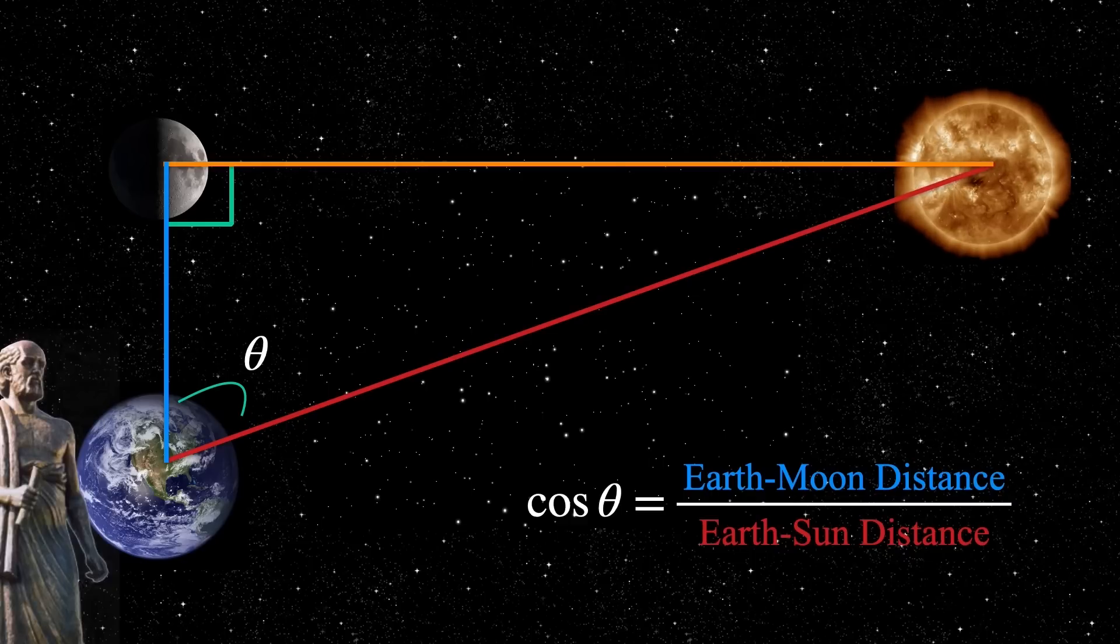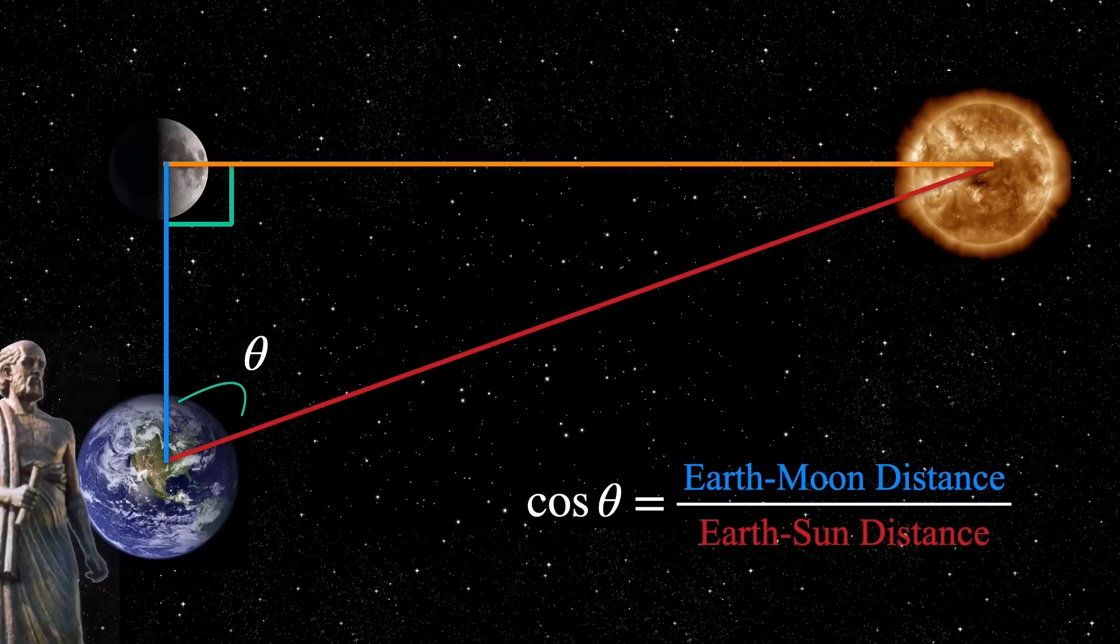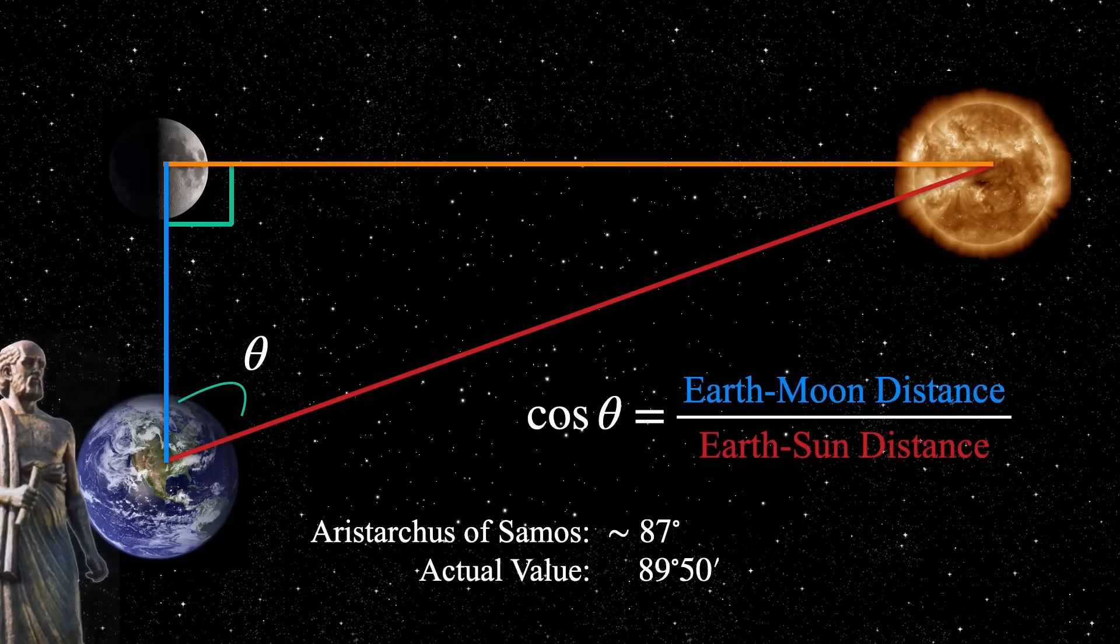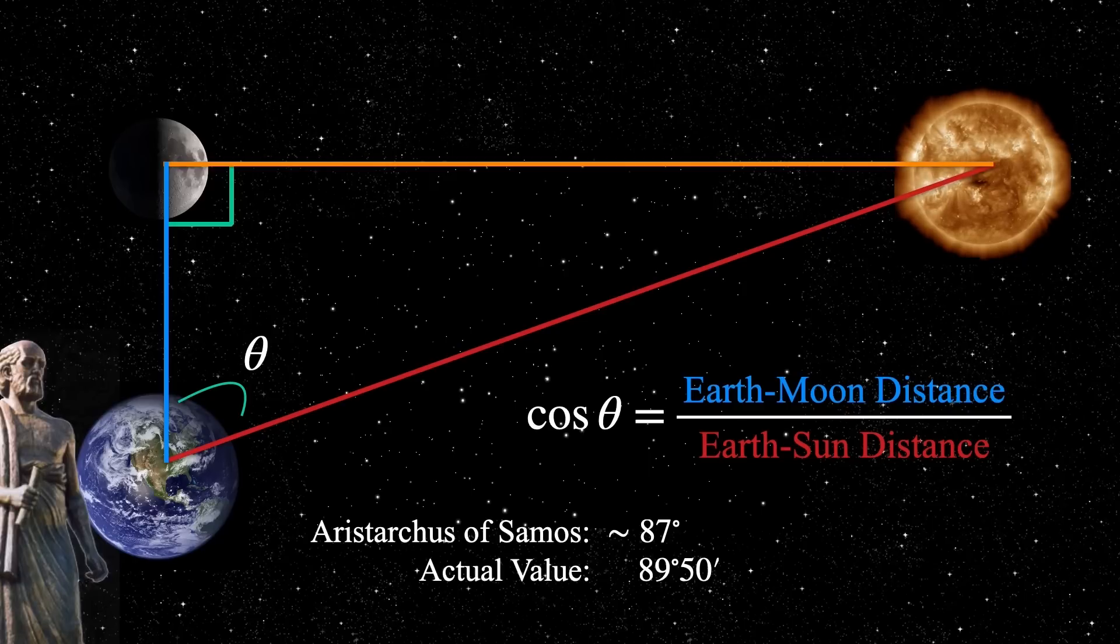But the moon in that triangle is at the 90 degree point. So we have a 90 degree triangle with the moon at the 90 degree point. And that's when it's a quarter phase, 90 degrees around a circle.